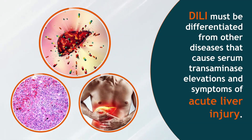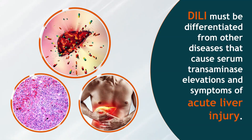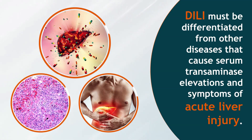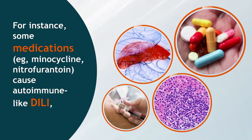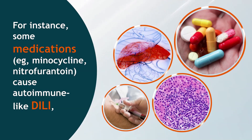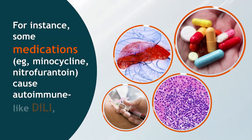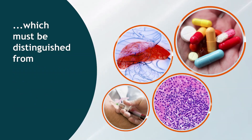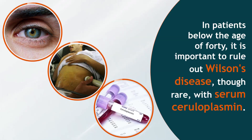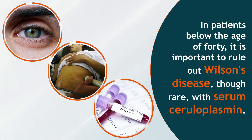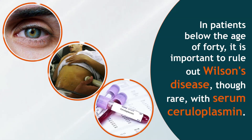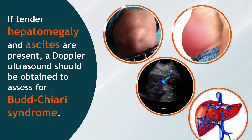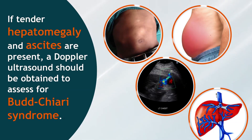Differential diagnosis: DILI must be differentiated from other diseases that cause serum transaminase elevations and symptoms of acute liver injury. For instance, some medications — such as minocycline and nitrofurantoin — cause autoimmune-like DILI, which must be distinguished from autoimmune hepatitis using serum studies. In patients below the age of 40, it is important to rule out Wilson's disease with serum ceruloplasmin. If tender hepatomegaly and ascites are present, a Doppler ultrasound should be obtained to assess for Budd-Chiari syndrome.